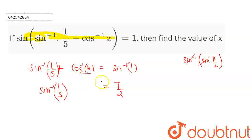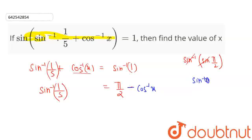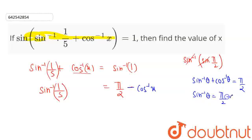If I take this term to the right side, this will be minus cos inverse of x. As you know that sin inverse of theta plus cos inverse of theta is equal to π/2, so that means sin inverse of theta equals π/2 minus cos inverse of theta.